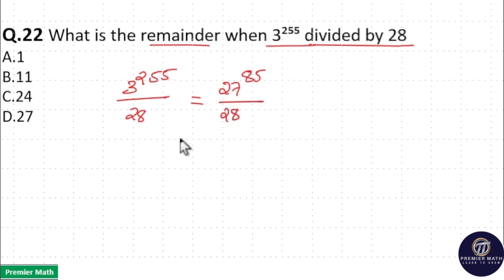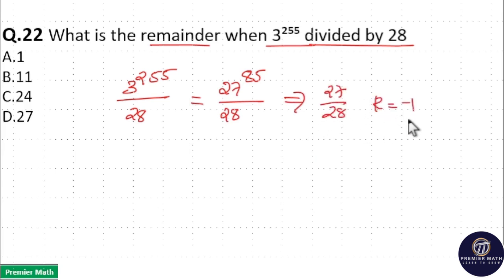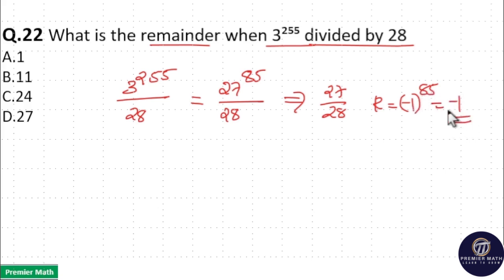So this is divided by 28. Now, 27 divided by 28 gives a remainder of minus 1. Therefore, minus 1 raised to 85 is equal to minus 1 itself. If the remainder is minus 1, you should add the denominator to it, so minus 1 plus 28 gives a remainder of 27.